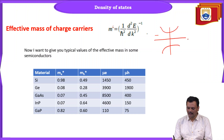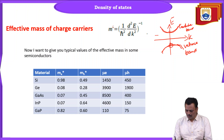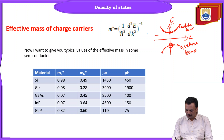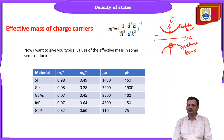Band structure is nothing but an E vs. K diagram, where the conduction band and the valence band are represented. The K axis and the E axis are shown. Based on the curvature of these bands, you can calculate the effective mass of charge carriers, because the charge carriers move through these bands inside the semiconductor.